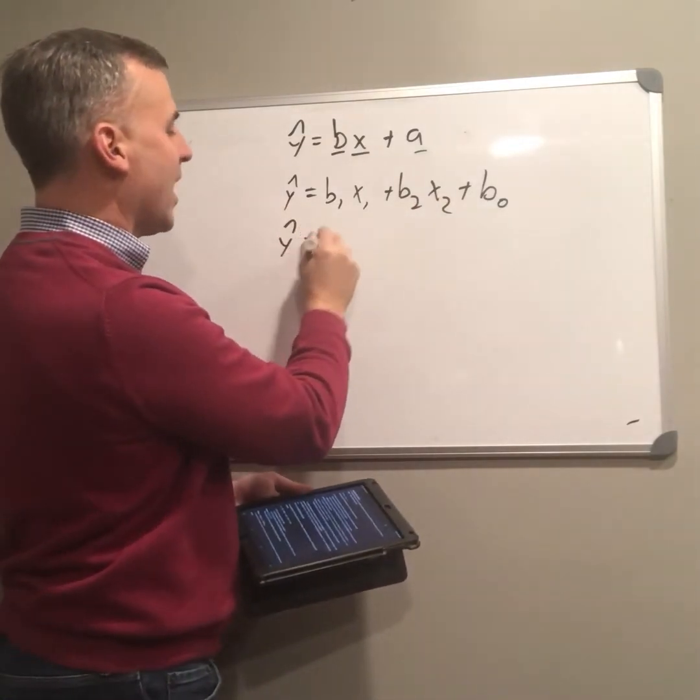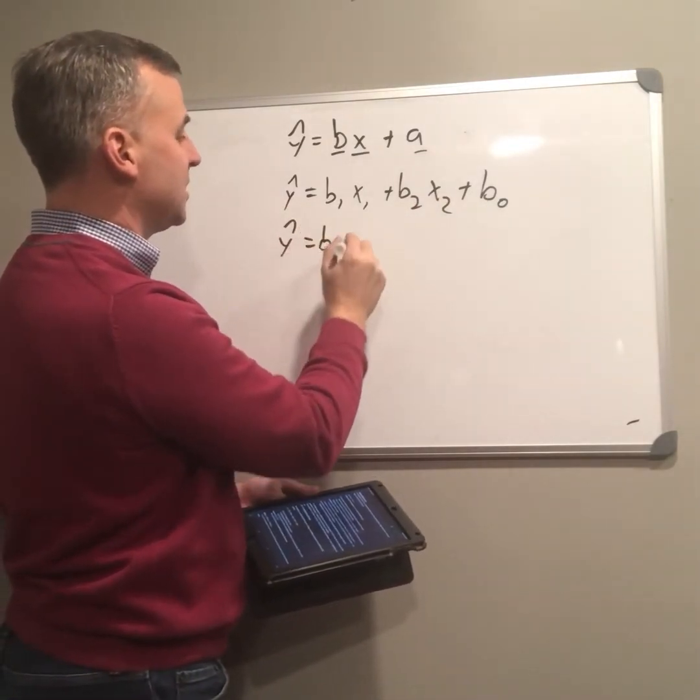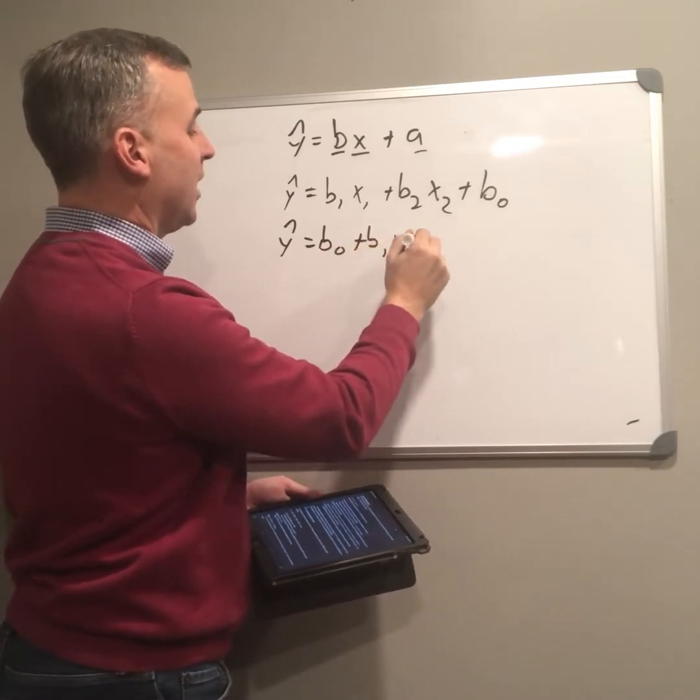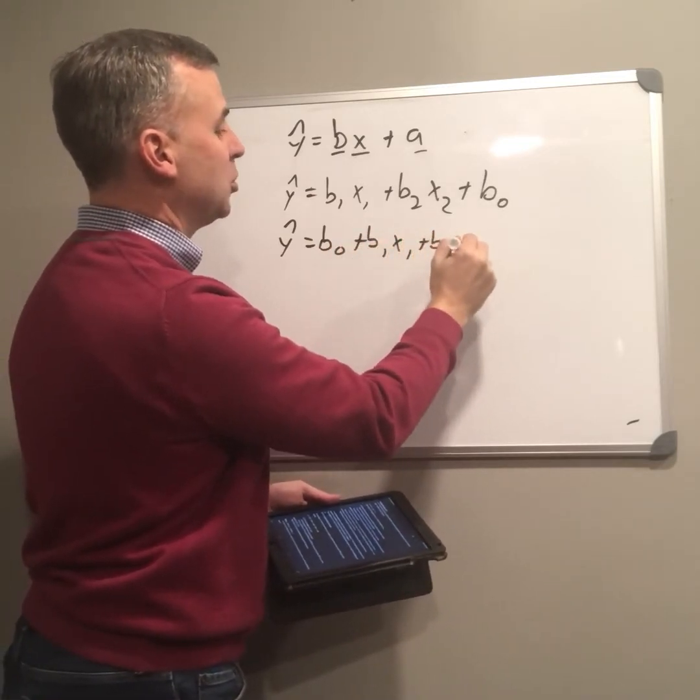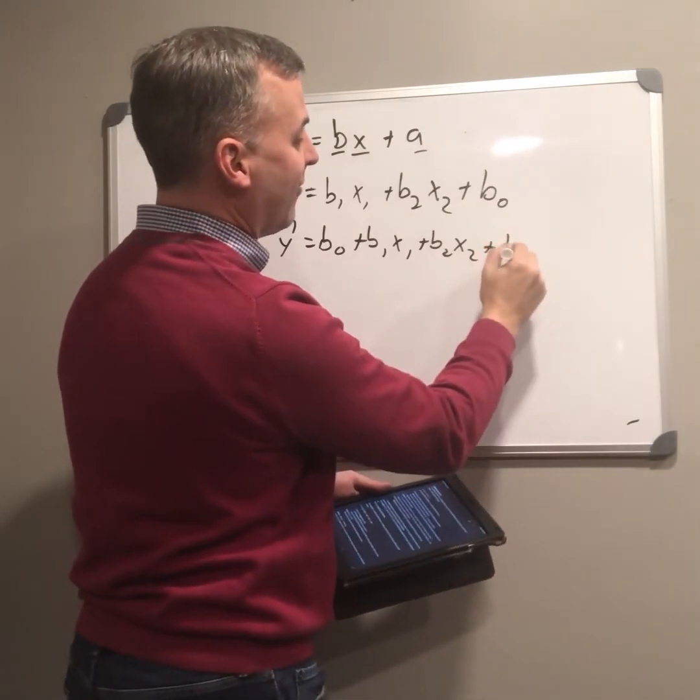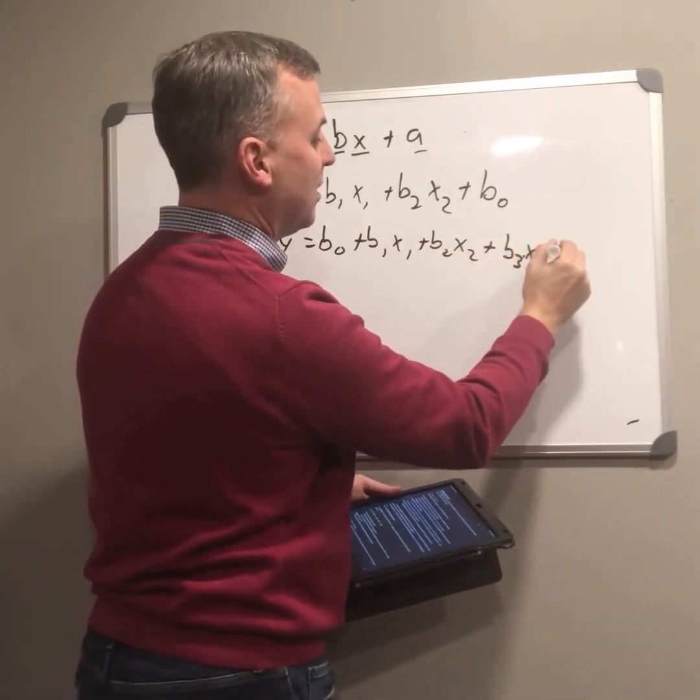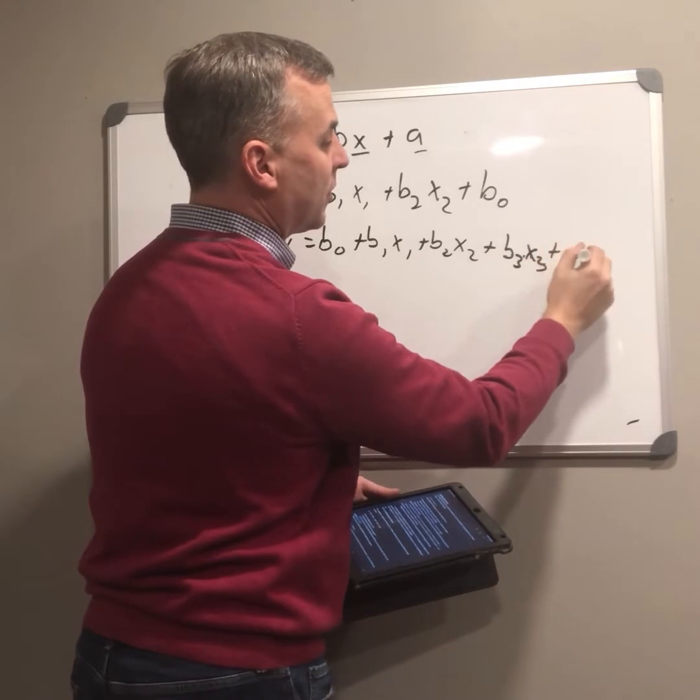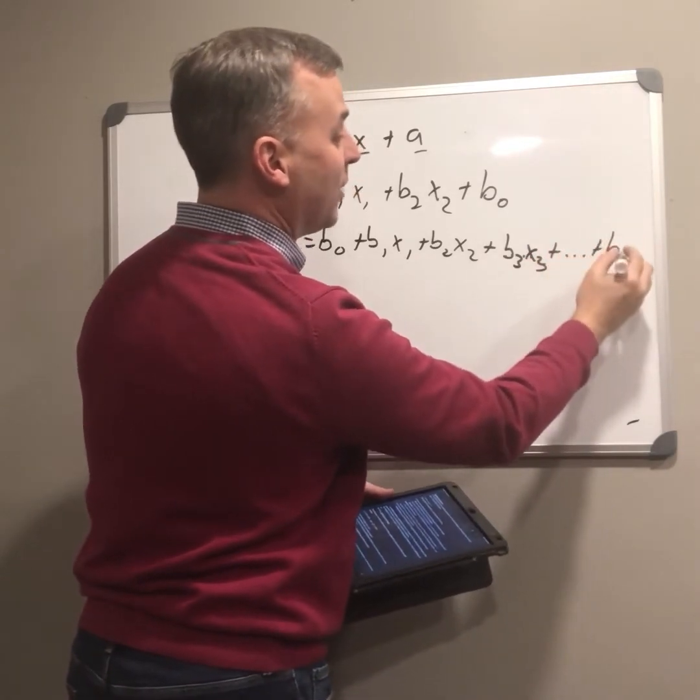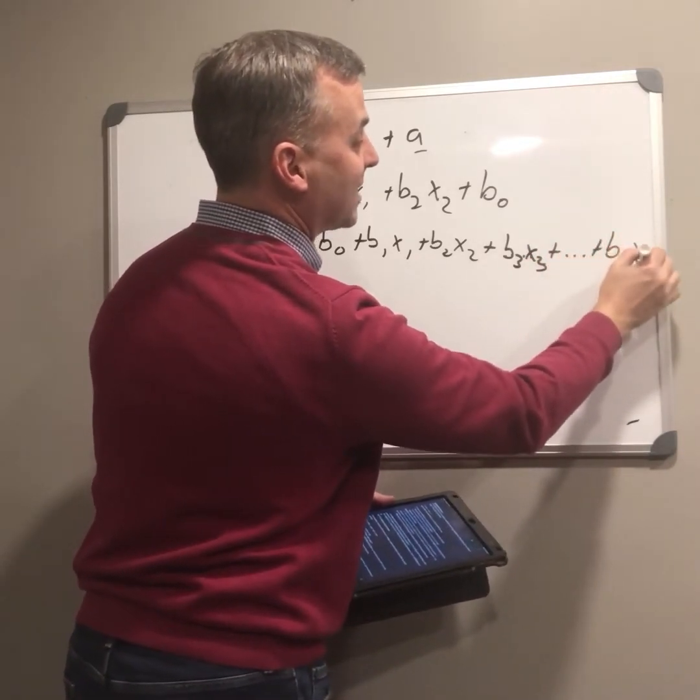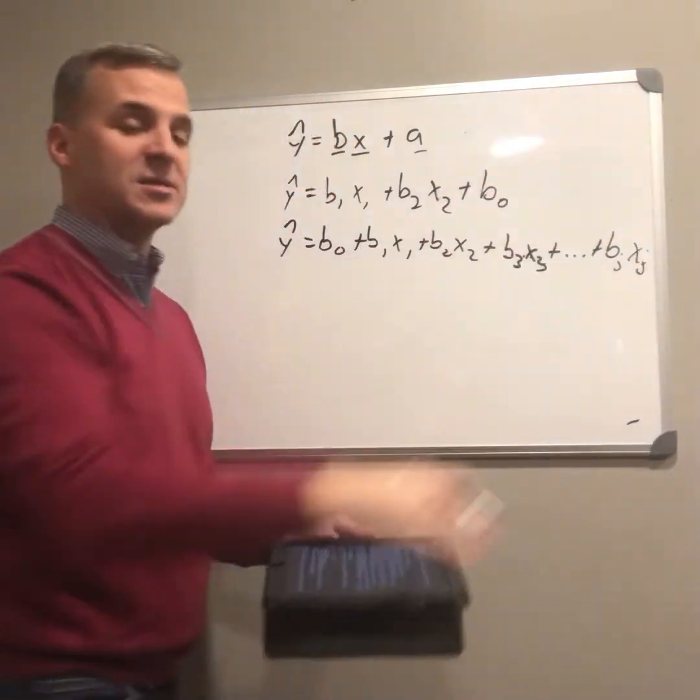I was going to write this a different way. I usually start actually with b sub 0 plus b1 x1 plus b2 x2. And I actually can go all the way out. So I can have b3 x3, all the way out to however many predictors I need, b sub j, x sub j, for as many as I need.